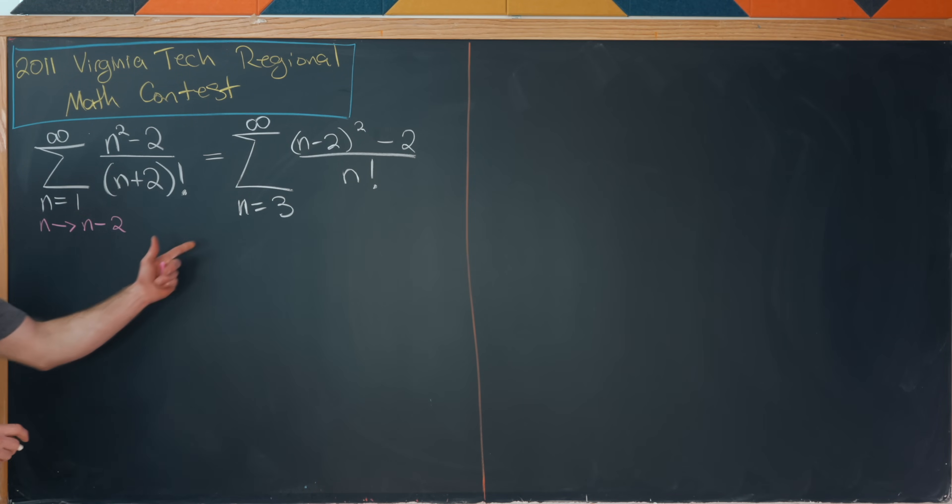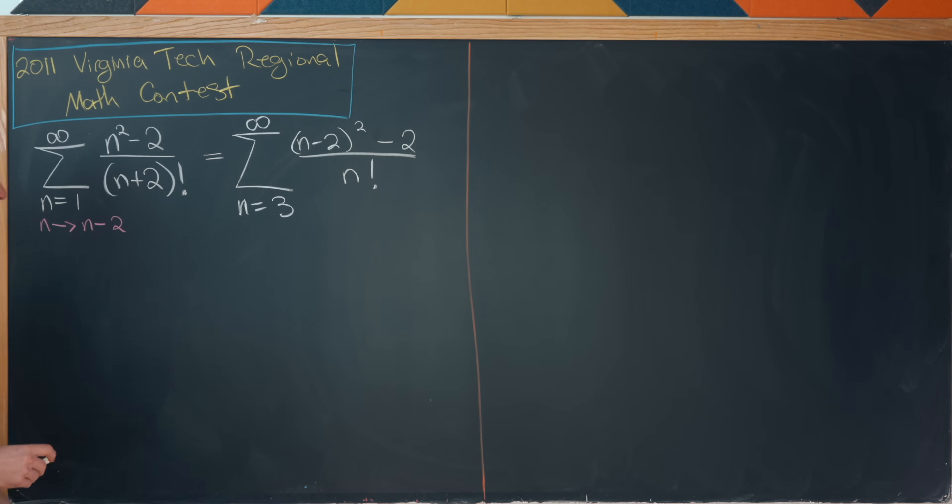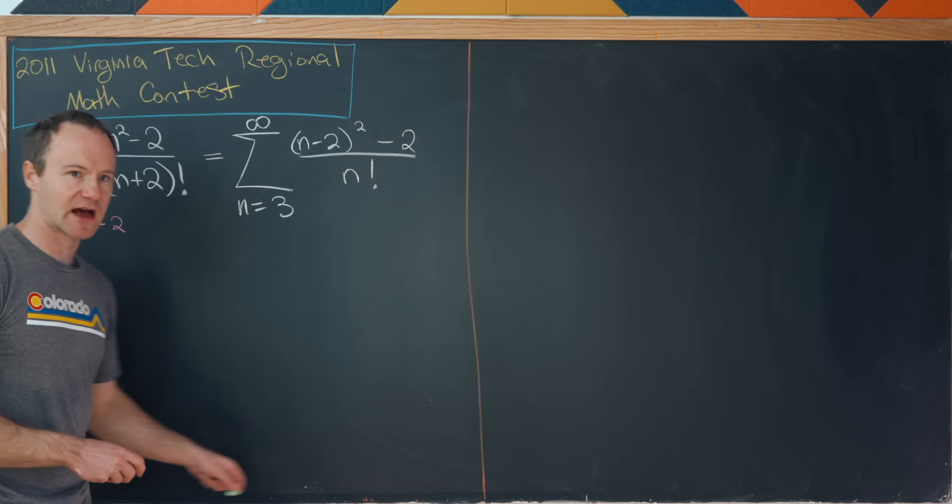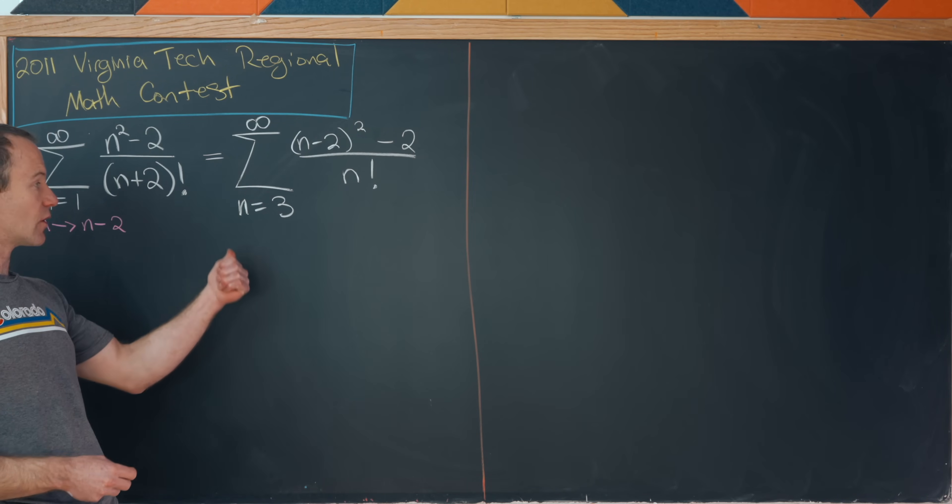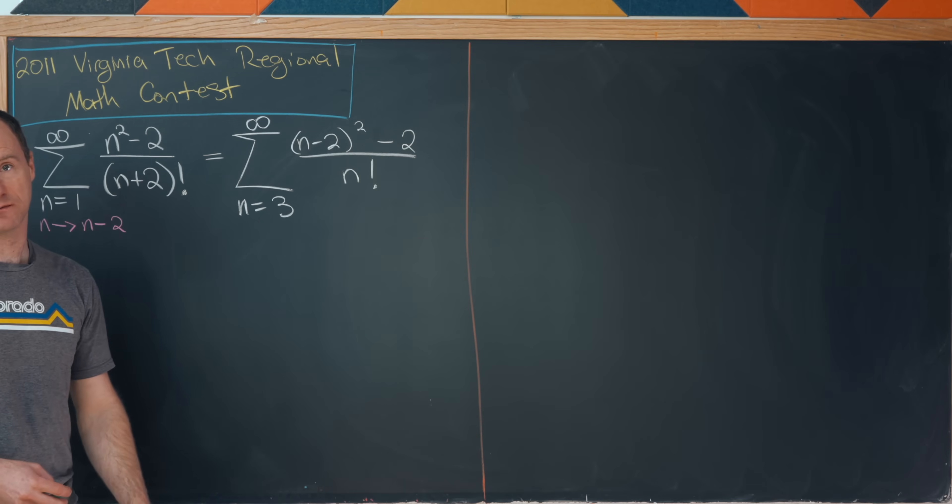But now I'm going to expand this out into a sum that starts at n equals zero. So in order to do that, I need to add the zeroth first and second terms into this sum.